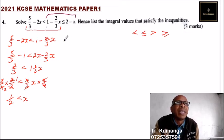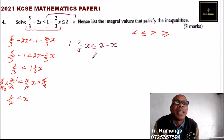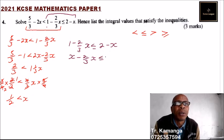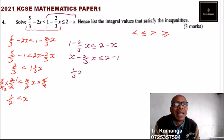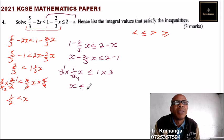For the second part: 1 minus 2 over 3x less than or equals to 2 minus x. We put the like terms together, taking x to the other side — it becomes positive — giving x minus 2 over 3x. Taking 1 to the other side, it becomes negative, so we have less than or equals to 2 minus 1, which is 1. We multiply both sides by 3 to eliminate the fraction, giving x less than or equals to 3.